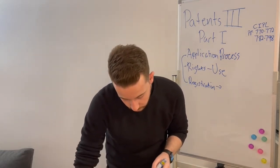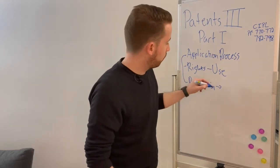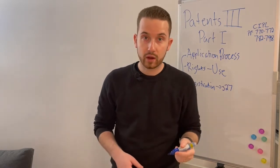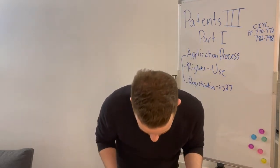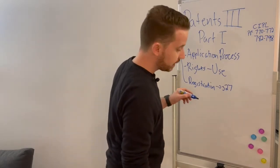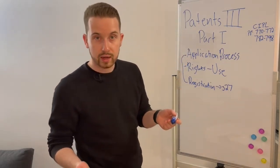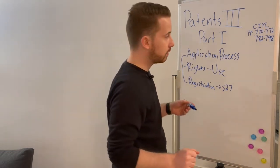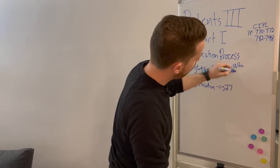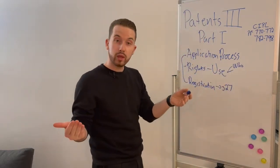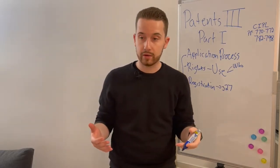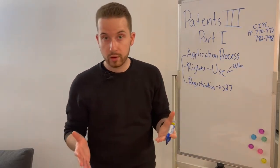The requirements for registration are under section 27 of the act. You have to go to the government, pay the fee, and meet the various conditions in your application. The specific requirements are detailed in the book at pages 770 and 771. First: who owns the patent — generally it's the person who made the invention, and it has to be clear in the application that that person wants to obtain the patent rights.